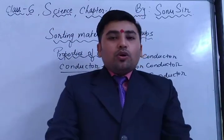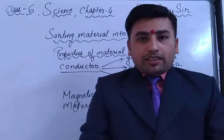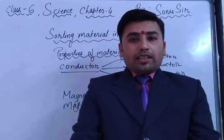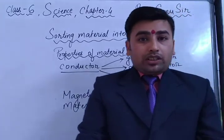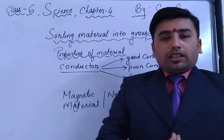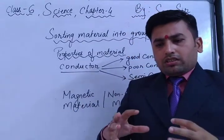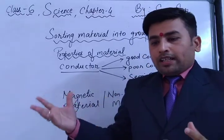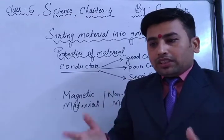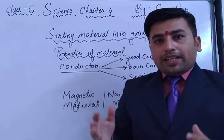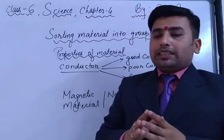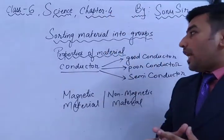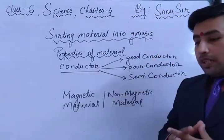Hello students, namaste! Today we are going to discuss Class 6 Science Chapter 4: Sorting Materials into Groups. In the previous video I explained different types of objects like opaque, transparent, and translucent. Today we are going to discuss some of the properties of objects, and this will be the last video of this chapter.